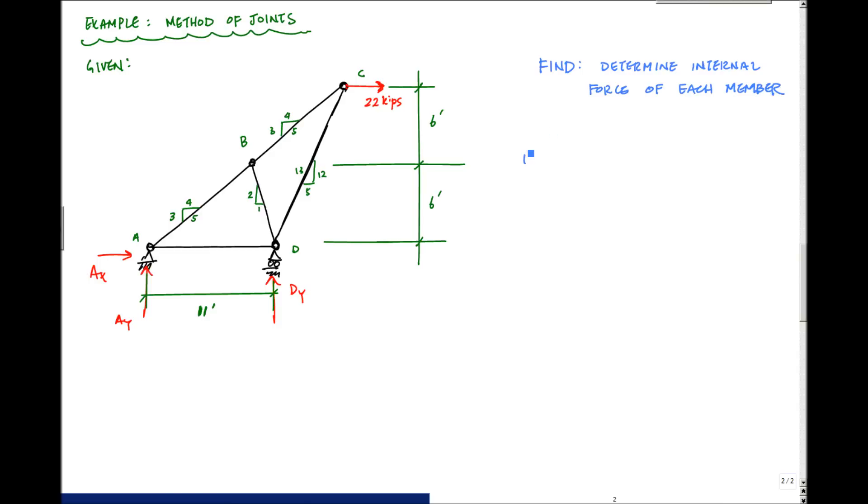And so if I were to check determinacy, I want to sum up all my unknowns. Determinacy: all my unknowns were the number of members plus the number of reactions. And I want to know is this equal to my number of equations, which is 2 times the number of joints. And so here I've got 1, 2, 3, 4, 5 members plus 1, 2, 3 reactions. And my number of joints, 1, 2, 3, 4 joints, 2 times 4. And yes, 8 equals 8, therefore statically determinate.